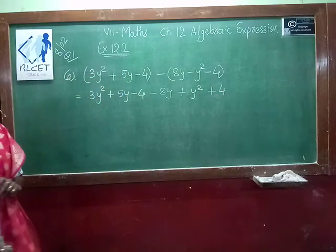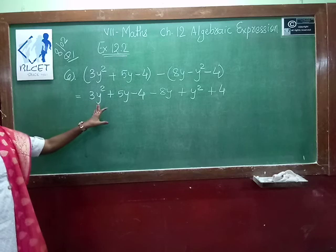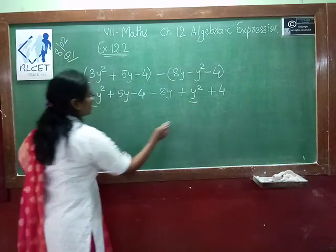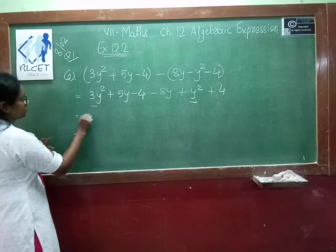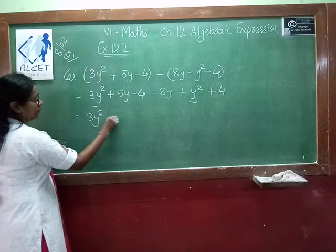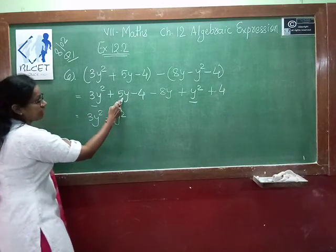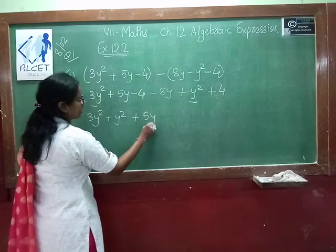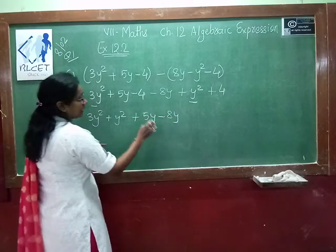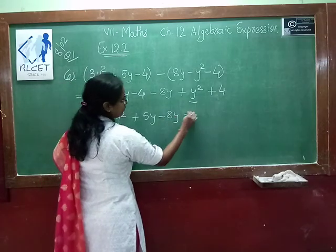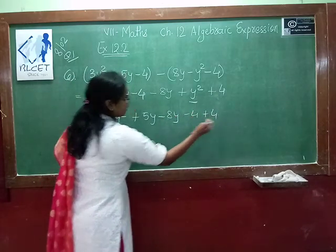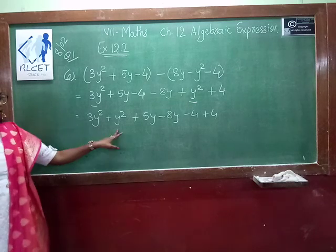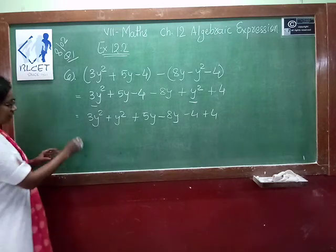So the sign will be changed: minus 8y becomes minus, minus minus becomes plus, plus 4. Now find the like terms first. 3y² and y² are like terms, so 3y² plus y²; then plus 5y minus 8y; then minus 4 plus 4. We write all the like terms together, then we will do the addition or subtraction.